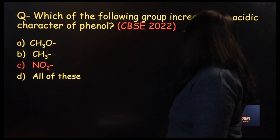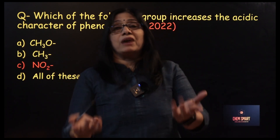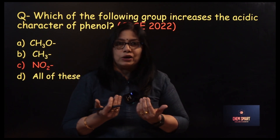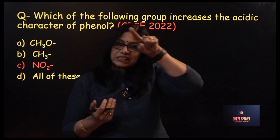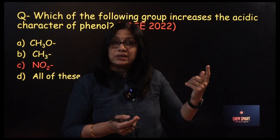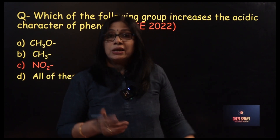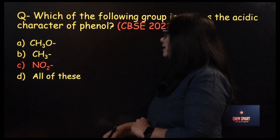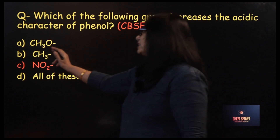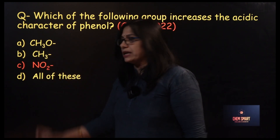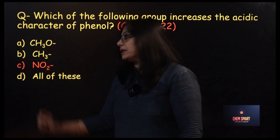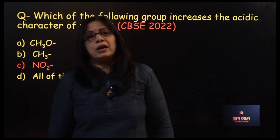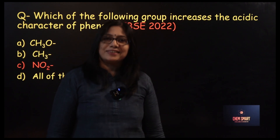Which of the following groups increases the acidic character of phenol? We have discussed that if there is an electron-withdrawing group on phenol, it will increase the polarity of the O–H bond, making release of H⁺ easier. So you just check for the electron-withdrawing group. Methoxy and methyl groups are electron-releasing. But the nitro group is electron-withdrawing — it will increase the dissociation of phenol, producing more H⁺. So the nitro group is the answer.